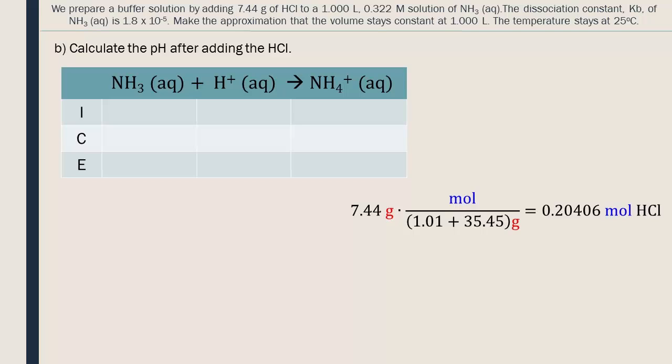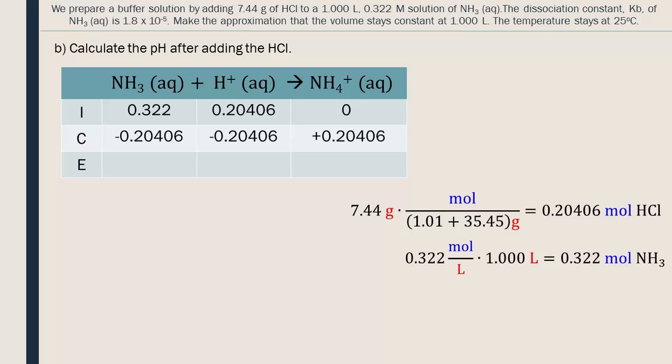Since the volume stays at one liter, the concentrations are equal to the number of moles. So in this solution, we have 0.322 moles of NH3 and 0.20406 moles of HCl. The HCl will push the reaction completely towards the products until there are no reactants left. There are fewer moles of H+ than of NH3, so H+ is the limiting reagent and will be used up completely.